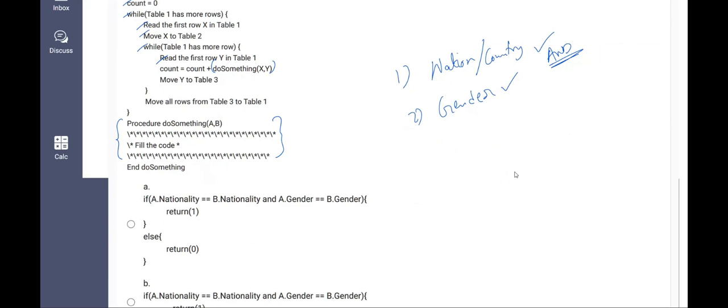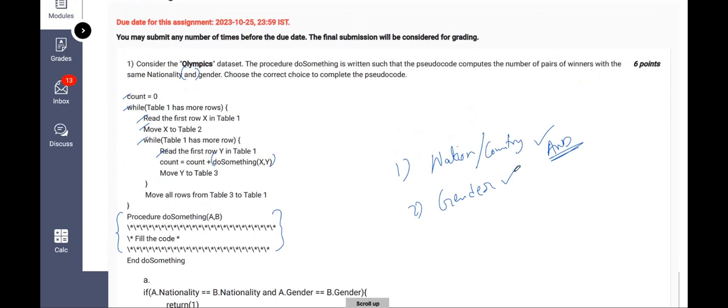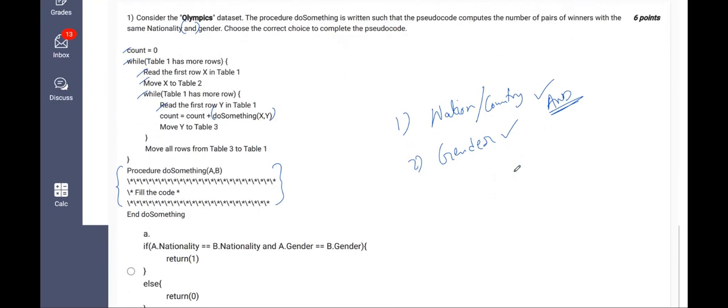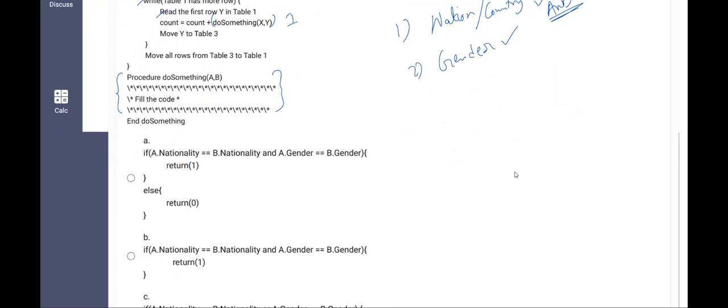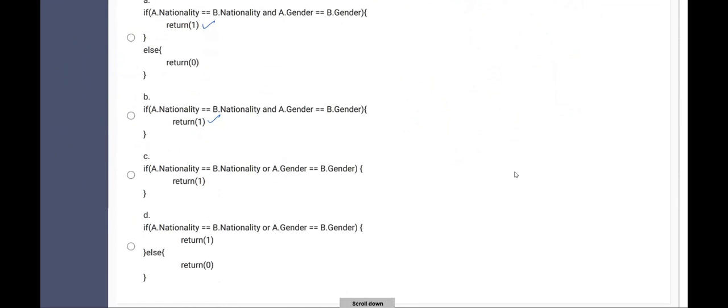In the question, they mentioned that it must be from same nationality and they must be of same gender. So here, if that is a perfect match, then we should return one. In order to increment the value of count, we will have to return one but not zero. So for a suitable match, we should return one. Here we are returning one. Even here we are returning one. This is a false option because it is an or operator. C is a mistake and even D is also mistake. Because there is an or operator, it must be an end operator.